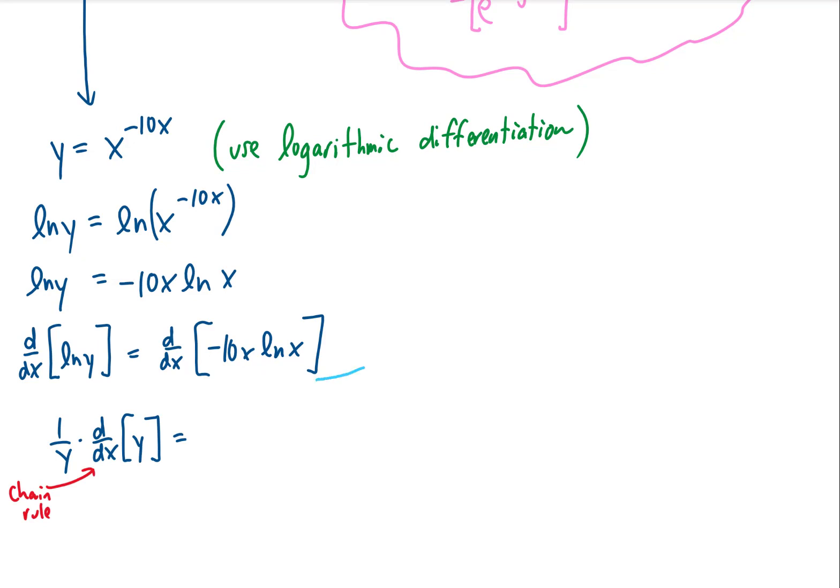On the right-hand side, we have a product of two functions of x, so we're going to use the product rule. I'll pull the negative 10 out in front first. The product rule says we take the first term, multiply it by the derivative of the second term, add, then take the derivative of the first term and multiply it by the second term.